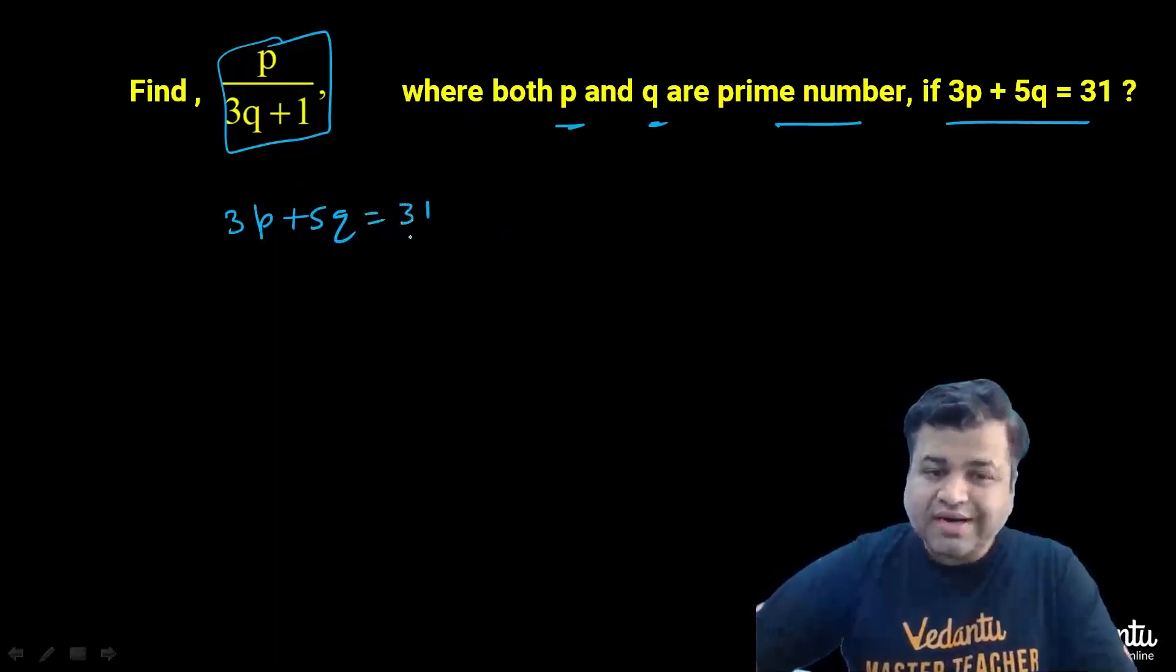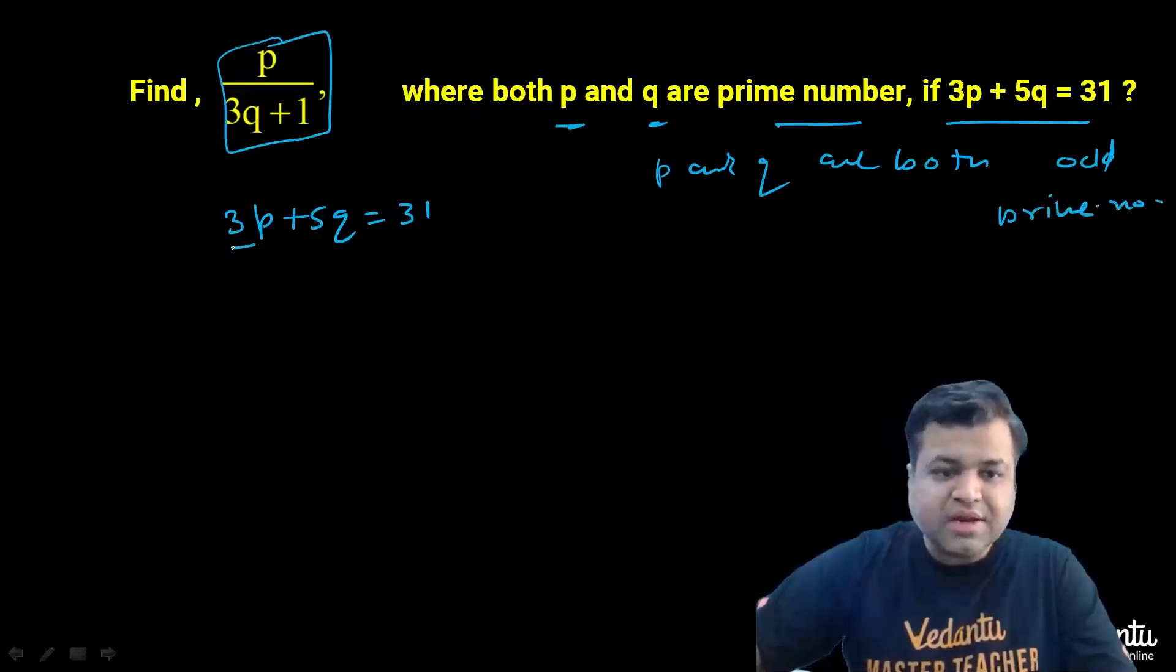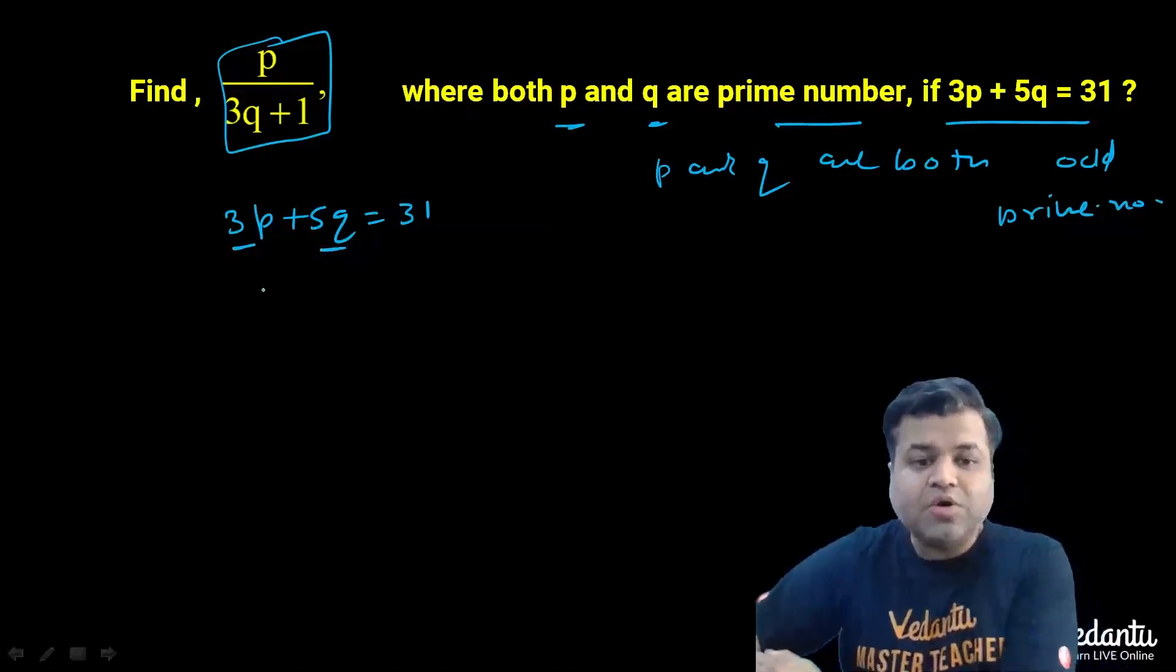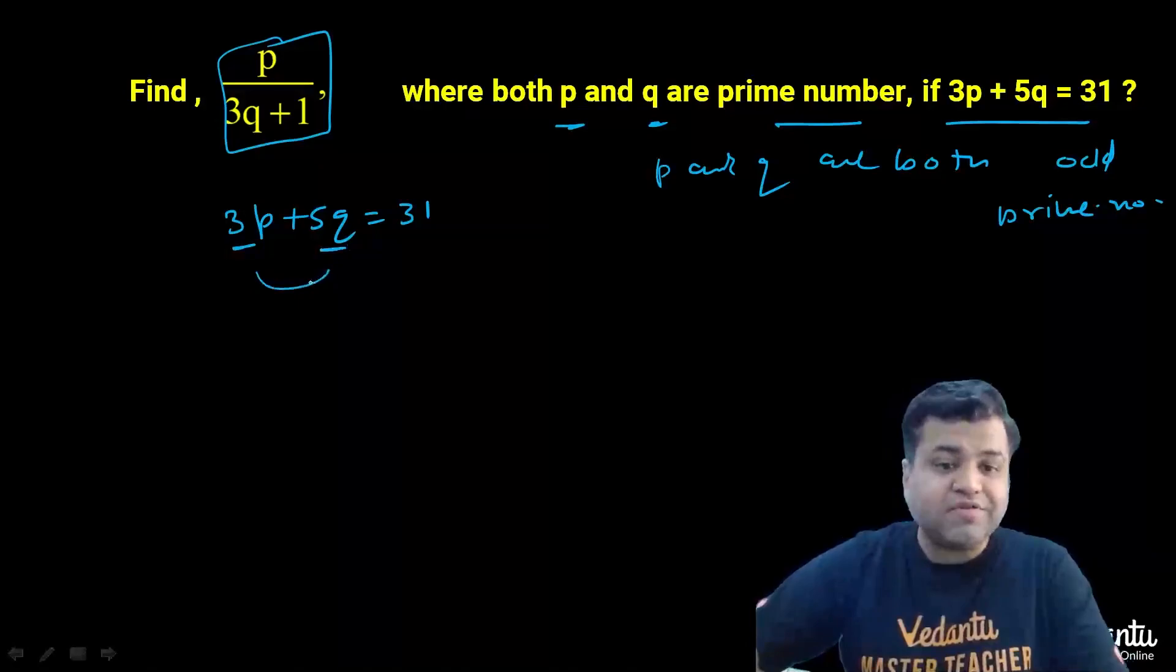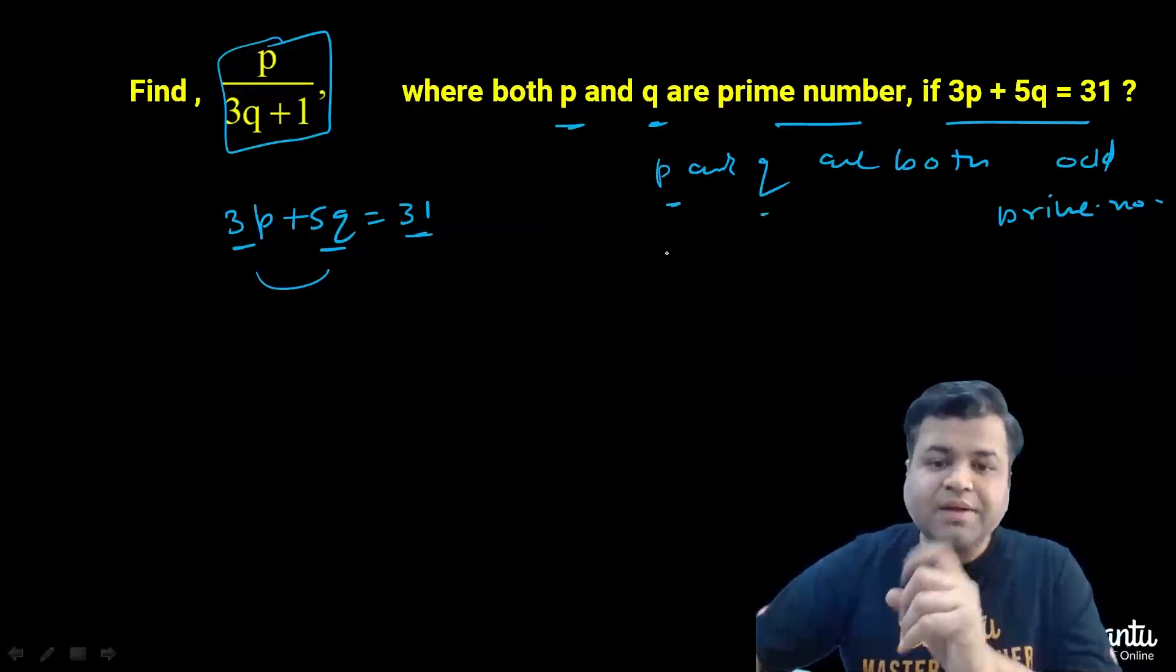So first of all, you need to understand that if P and Q are both odd prime numbers, then clearly 3P will be odd and 5Q will be odd. But the sum was given to be 31, which is odd. So at least one among P or Q has to be an even prime number. We have only one even prime number, which is 2.